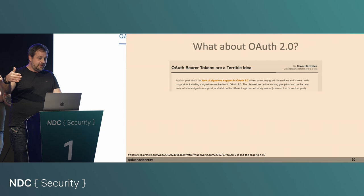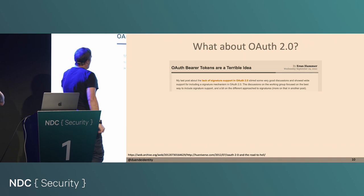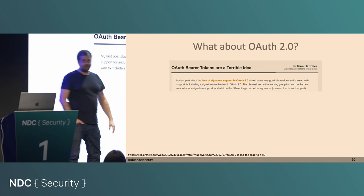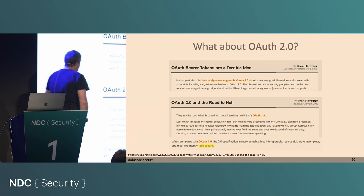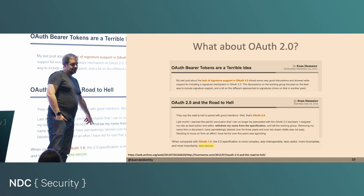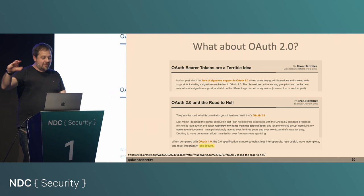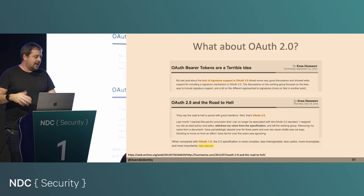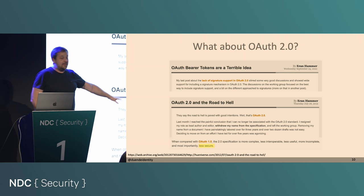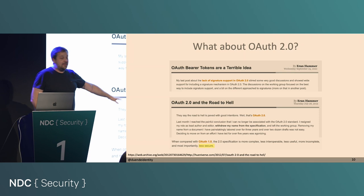In OAuth 2, they removed all of the signature stuff from the spec and came with a new idea called bearer tokens. The reasoning was that a couple of years later, TLS was now pretty much a given, so you don't have to fight against an insecure transport. Maybe bearer tokens are good enough. Aaron Hammer hated that. A couple of years later, he actually withdrew his name from the RFC document, saying he wasn't giving his name away for an enterprise version of OAuth where the big players simplified it to a point where it's too dumb to be secure.